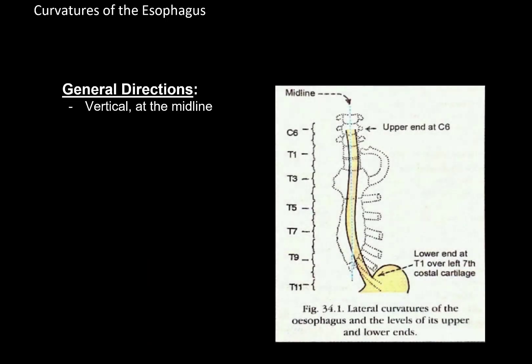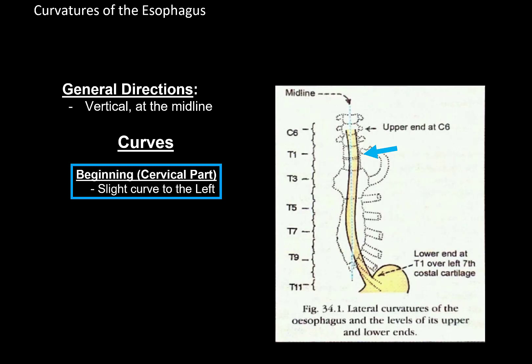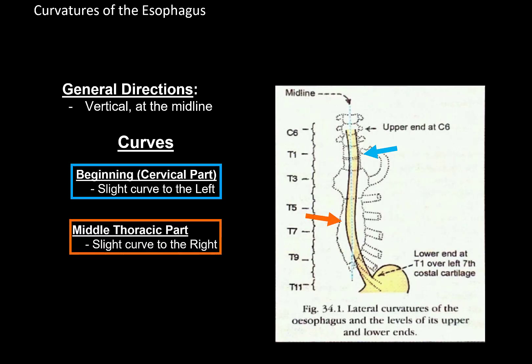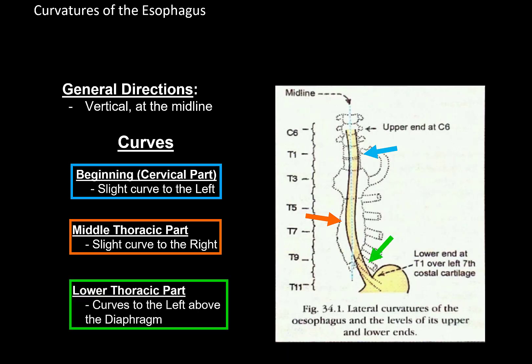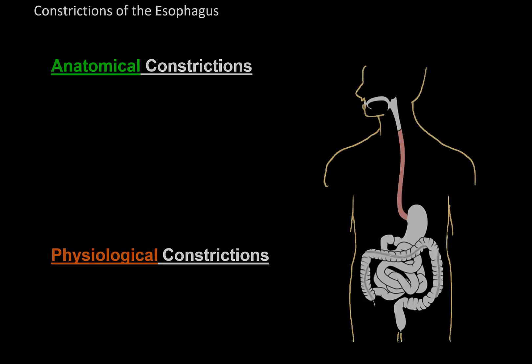The esophagus doesn't just go vertically down in a straight line — it actually has some curvatures that are important anatomically. First, at the beginning, it curves slightly to the left. Then in the middle of the thoracic part, it curves slightly to the right. And then at the lower thoracic region, it curves to the left again to go through the diaphragm and into the stomach.